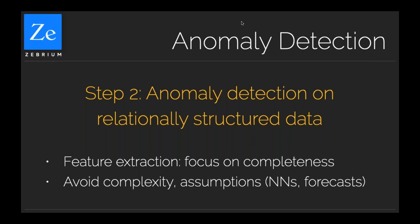We try to avoid being too complex — we want the stack to run fast and keep costs down for users. We're not using neural networks at this point; we're using a fairly simple stochastic model to look for cross-correlation. We also try to avoid long-term assumptions — for example, assuming that metric patterns from last month should be the same this month. We want to be responsive to incidents that can happen today on a newly deployed version of your application.